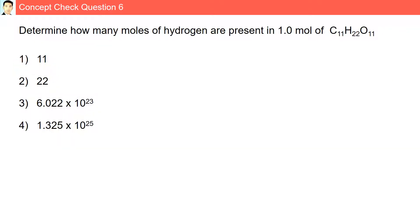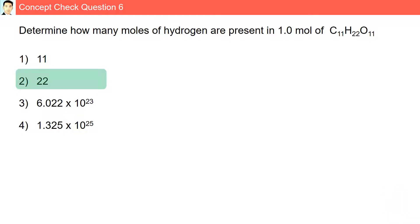Question 6. Determine how many moles of hydrogen are present in 1 mole of C11H22O11. There are 22 atoms of hydrogen in C11H22O11, so there are 22 moles of hydrogen present in 1 mole of C11H22O11.